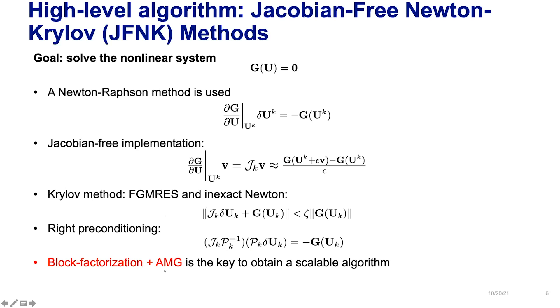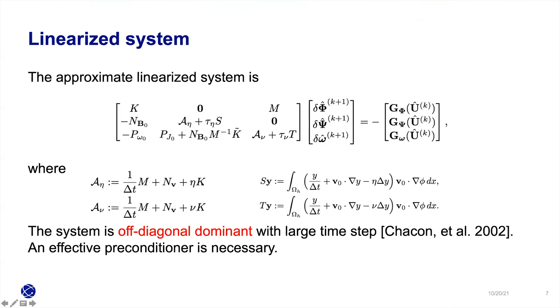The focus of this talk will be on how we come up with this preconditioning and how we develop it in the MFEM framework. To linearize the system, the approximate linearization looks like this: three fields, and this system can be off-diagonal dominant in the large time step limit, so we need to do something to invert this matrix.